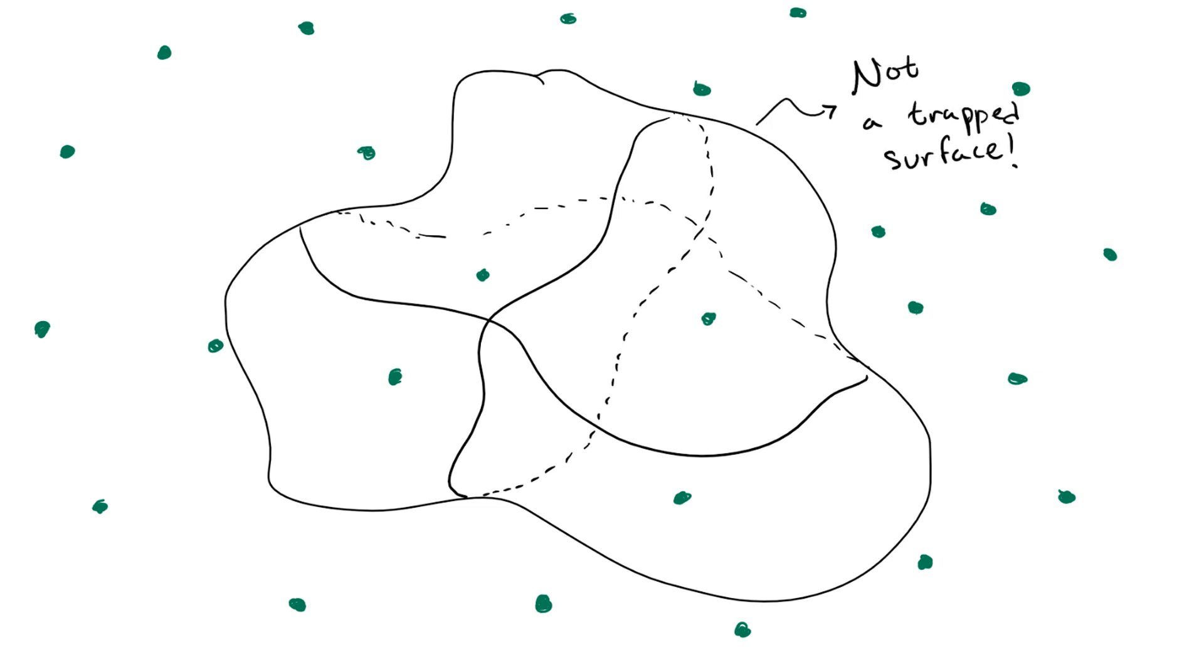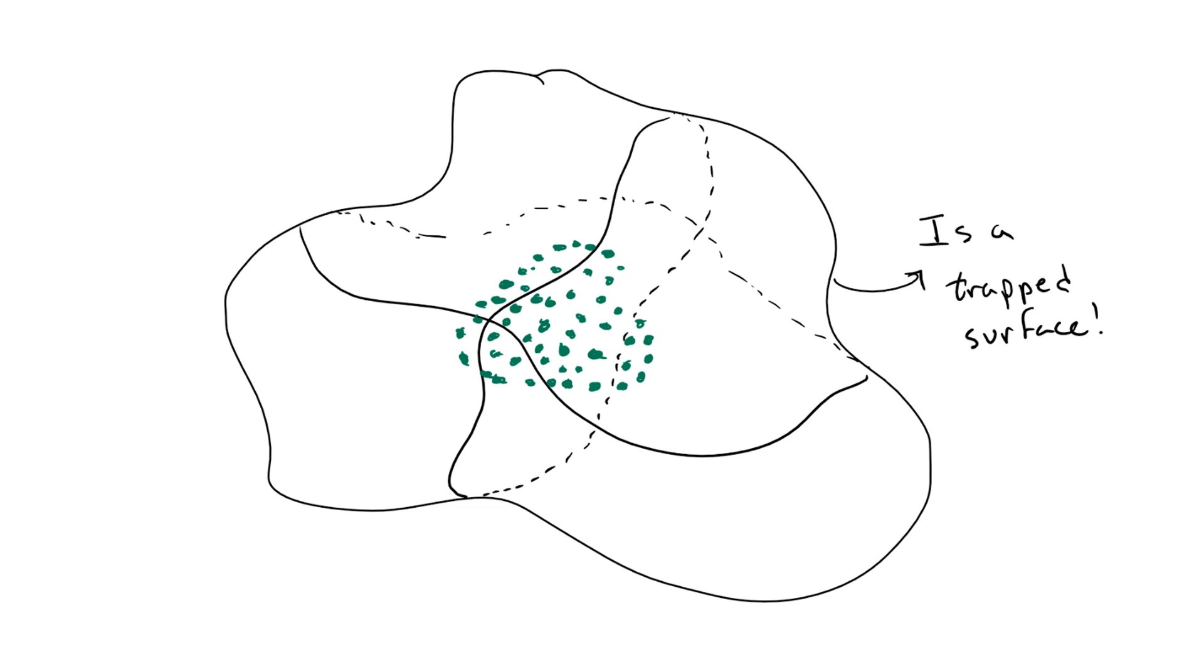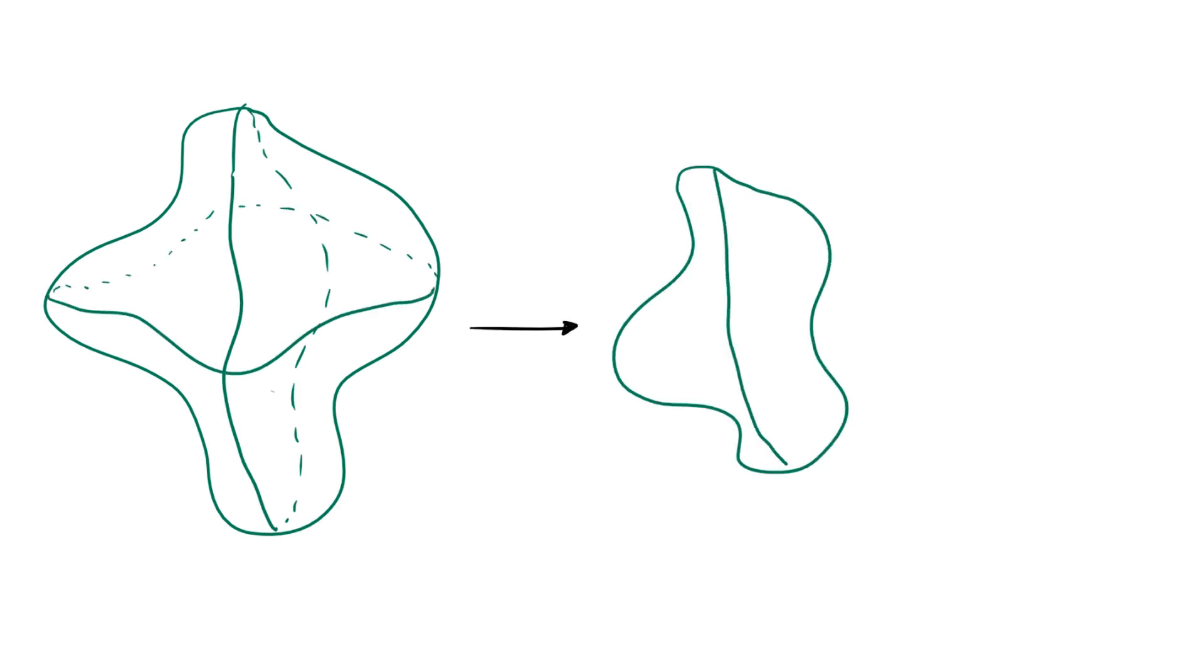However, if the light pulses converge instead, then the surface is trapped and there must be a black hole in the spacetime. Another way of saying this is that if I define a surface as being the location of all of these light pulses at a given time, if the area of the surface shrinks, it is a trapped surface.